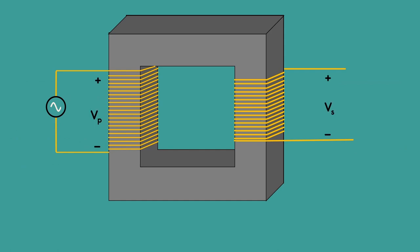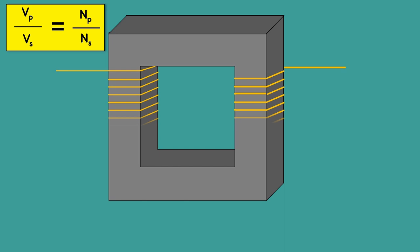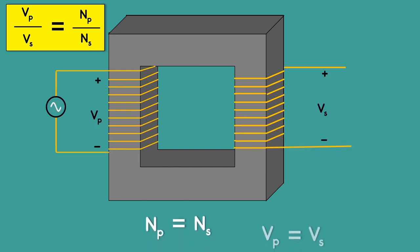The amount of voltage induced depends on the number of turns of the winding. If the primary and the secondary windings have the same number of turns, the voltages at primary and the secondary will be the same in the ideal case.